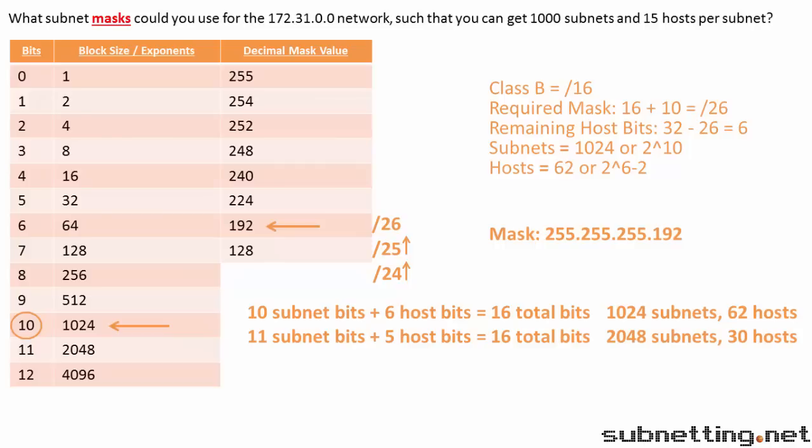Now let's try 12 subnet bits and 4 host bits. 2 to the 12th is 4,096, and 2 to the 4th minus 2 equals 14. This does not work because we need at least 15 hosts per subnet.